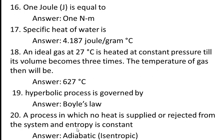Twentieth question: a process in which no heat is supplied or rejected from the system and entropy is constant — this process is called an adiabatic process. When the adiabatic process is also a reversible process, we call it an isentropic process. So a reversible adiabatic process is an isentropic process.